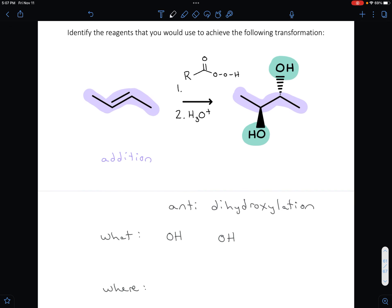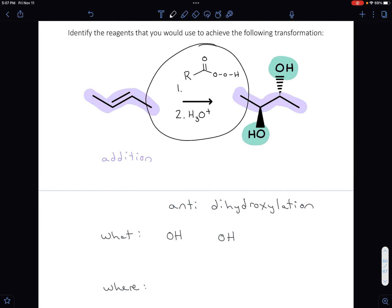The second step is always H3O+ hydronium. Those would be the reagents you would need in order to accomplish this transformation, this anti-dihydroxylation.